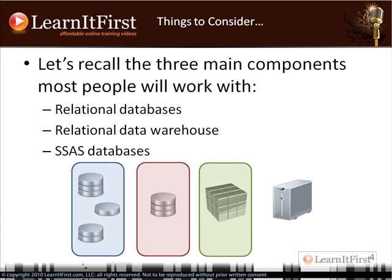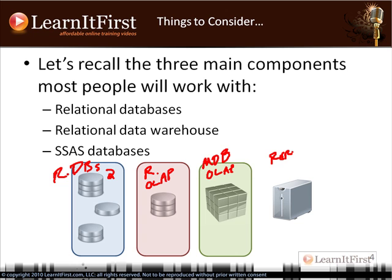Let's recall what's going on here architecturally. We have relational databases — our data entry systems. We have our relational data warehouse with fact tables, dimension tables, and the star schema. Then we have our SSAS database — our multi-dimensional OLAP database. And then there's a fourth optional component, which was our report server.